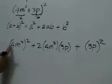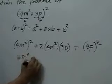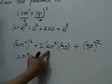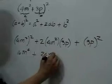Evaluating this, we have 4 squared, or 16, m to the 4, plus 2 times 4, 8, times 3, is 24, m squared, p,